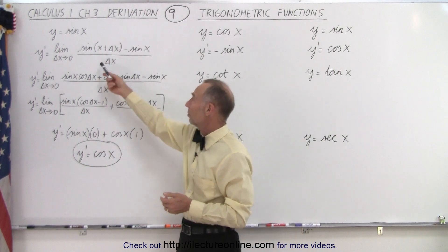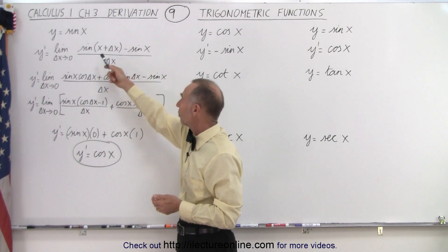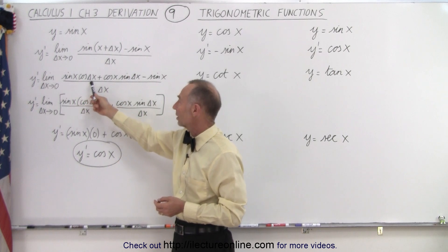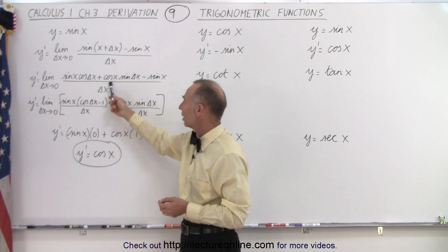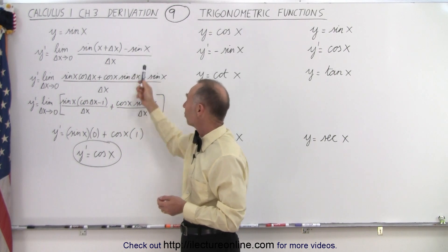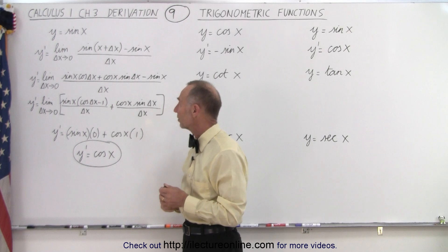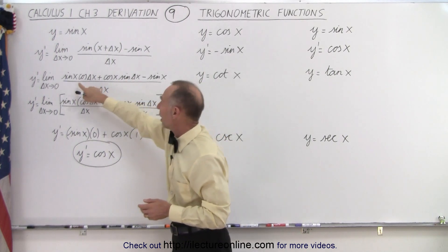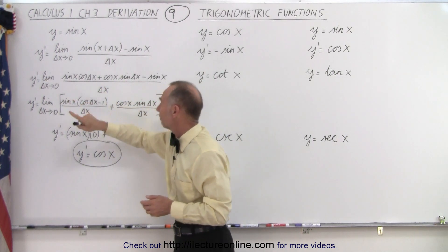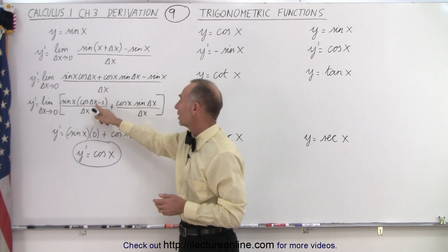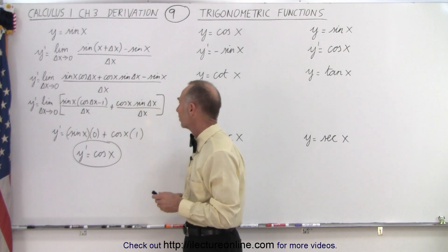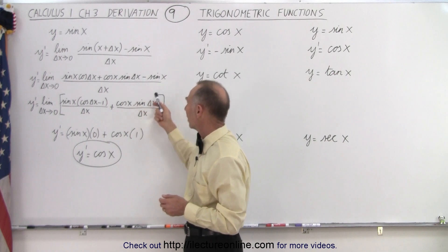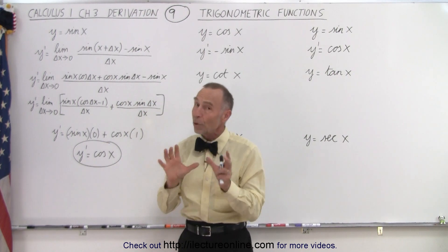So what we do here is we have the sine of a sum of two angles, so we write that as the sine of x times cosine of delta-x, plus the cosine of x times sine of delta-x, minus the original function, all divided by delta-x. When we combine terms here, we can factor out the sine of x — we have cosine of delta-x minus one, all over delta-x — and here we end up with cosine of x times sine of delta-x over delta-x.